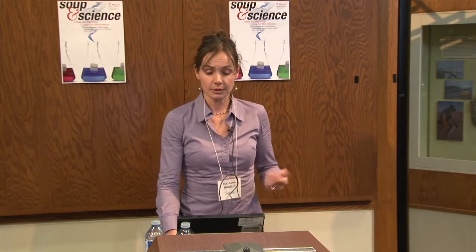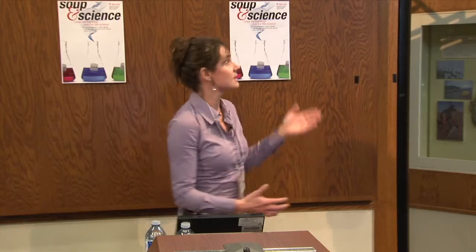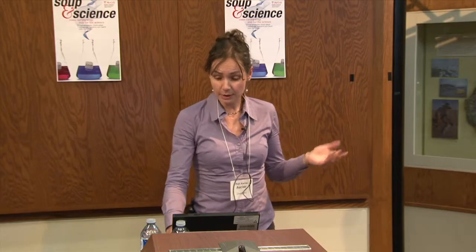So we did some medicinal chemistry and came up with molecules that worked in cells. As you can see, the y-axis shows bacterial growth as a function of antibiotic concentration. With the antibiotic alone you can kill the bacteria, but if you add our inhibitor you can kill the bacteria even faster — though the effect was very small. So we wanted something better.